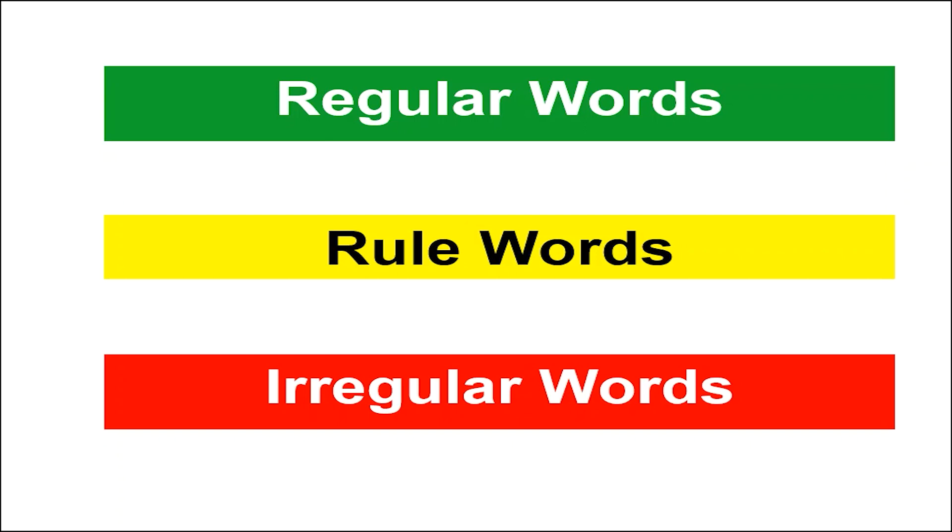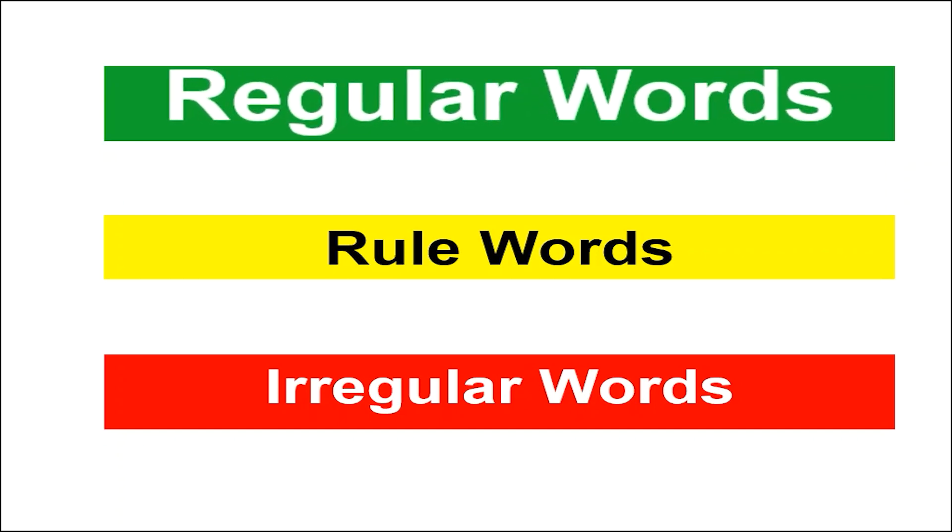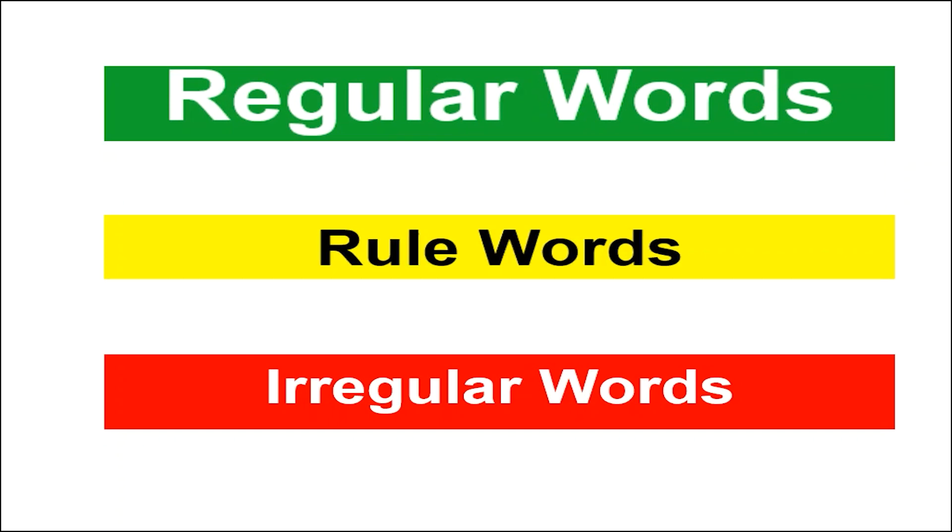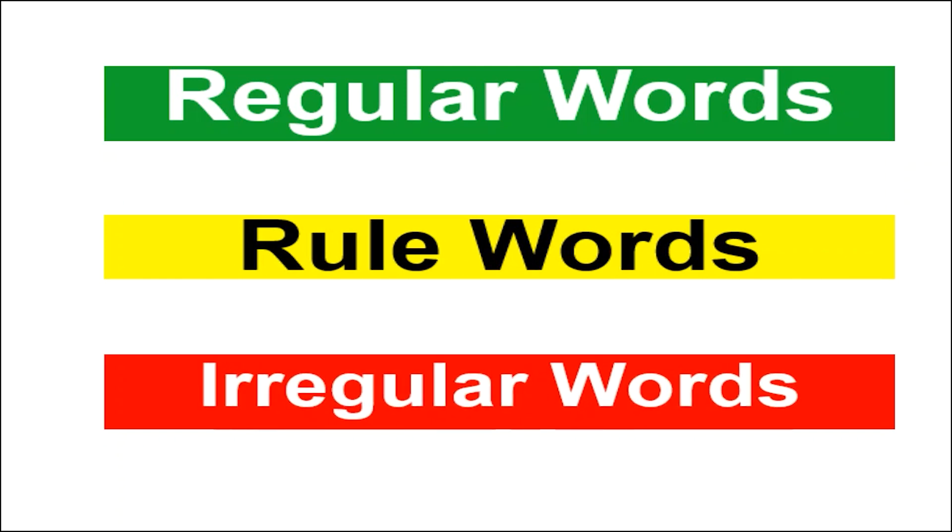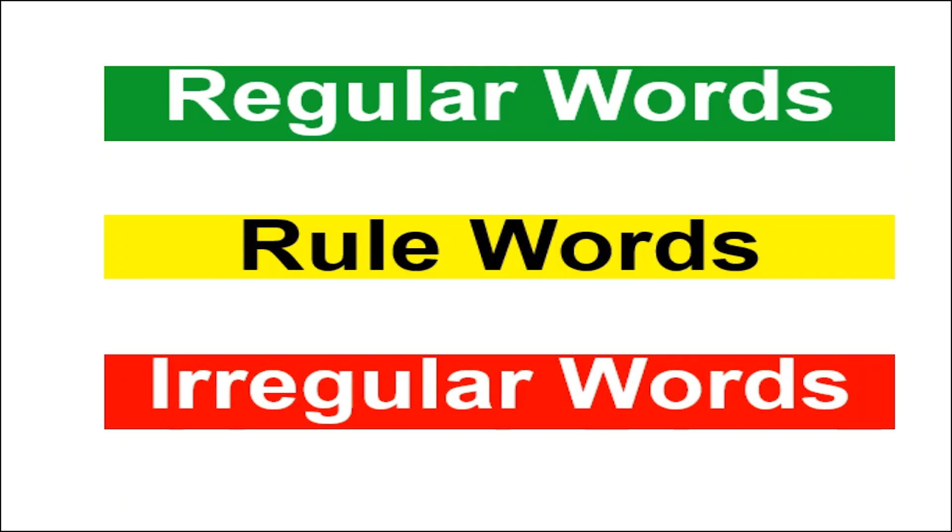There are three different kinds of spelling words. They are regular words, which are spelled just the way they sound and follow the most frequent spelling patterns. Rule words, which are spelled just the way they sound, but a letter is doubled, dropped, or changed. And irregular words, which are spelled in an unexpected way.